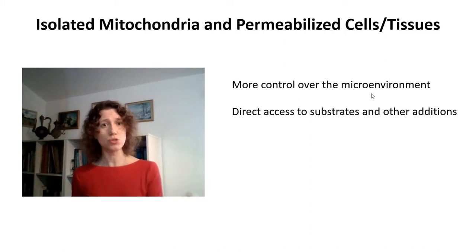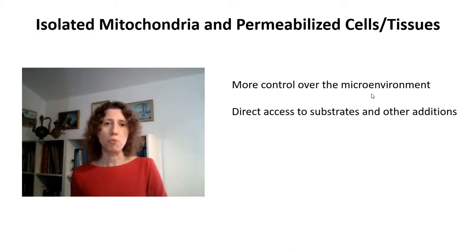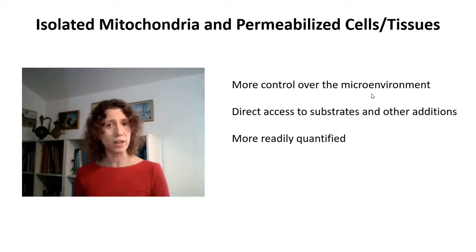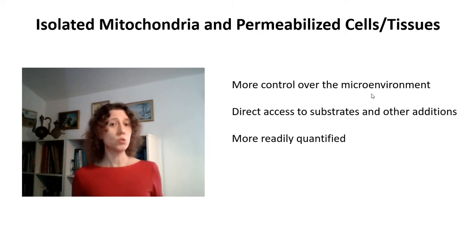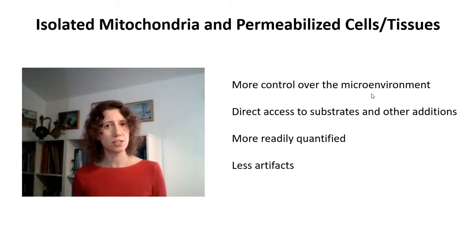You can add substrates, ions, or other things and know that they're going to directly interact with mitochondria. You don't have a membrane separating your additions from the organelle you're studying. Because of this simplified situation, you can really quantify mitochondrial processes very specifically — for example, the mitochondrial inner membrane potential in millivolts, which might be difficult to measure in intact cells or tissues. This is a less complex condition and therefore you'll have a lot less artifacts.